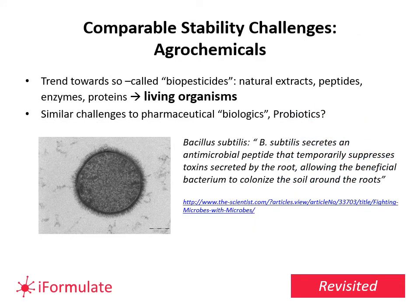In agrochemicals, the trend toward bio-pesticides — natural extracts, sometimes peptides, enzymes, proteins, and living organisms — presents similar challenges and this trend has continued. Bacillus bacteria are used in agrochemicals and continue to be used. Bacillus subtilis, for example, secretes antimicrobial peptides, suppresses toxins secreted by roots, and allows beneficial bacteria to colonize the soil around roots. But it needs to be alive to do that — just like a probiotic needs to be alive. So how they deliver that has real relevance to what the probiotic industry is trying to achieve.